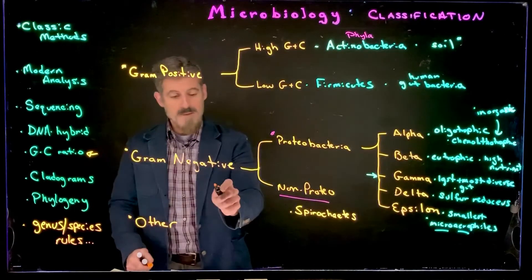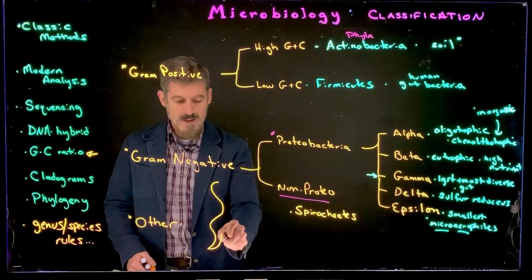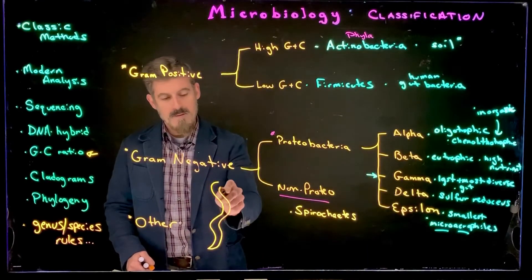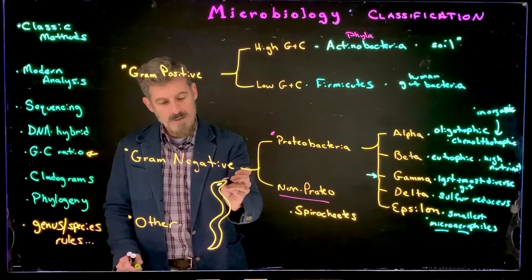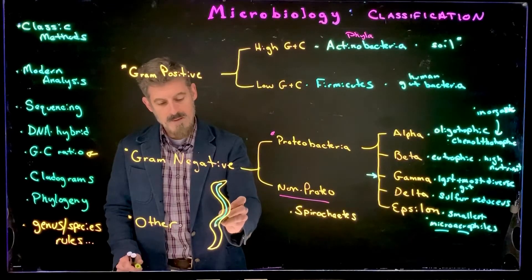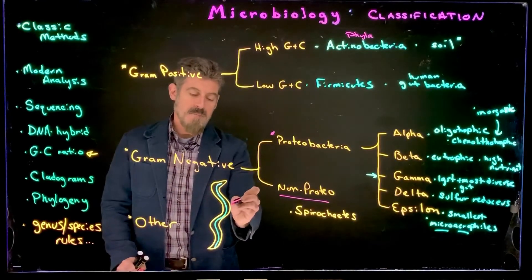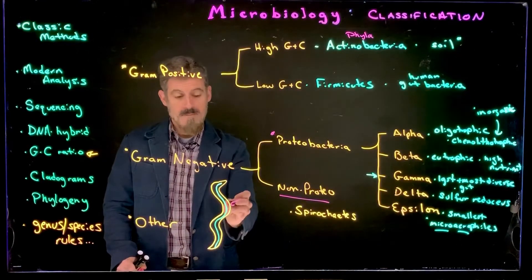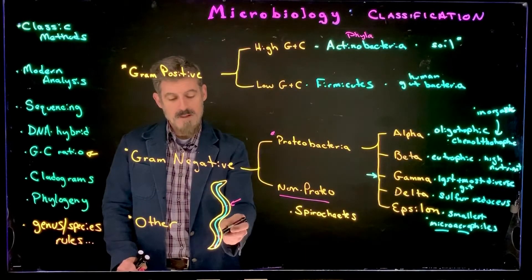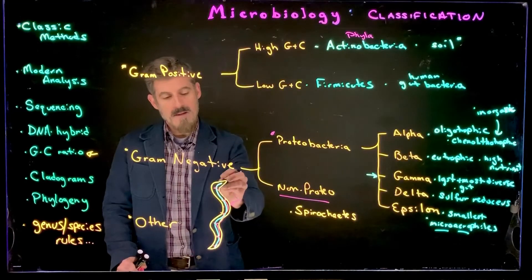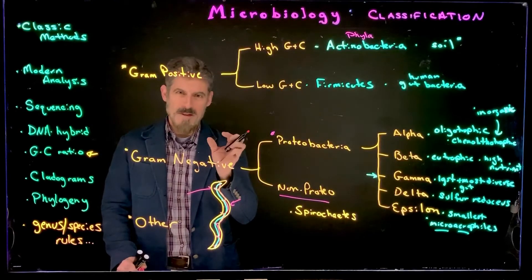The key thing to know about spirochetes is that a lot of pathogens are spirochetes. They have a flagella located within the periplasm — the space between the cell membrane and the cell wall. In most bacteria, the flagella extends outside the cell, but in spirochetes, this periplasmic flagella causes them to move like a corkscrew.